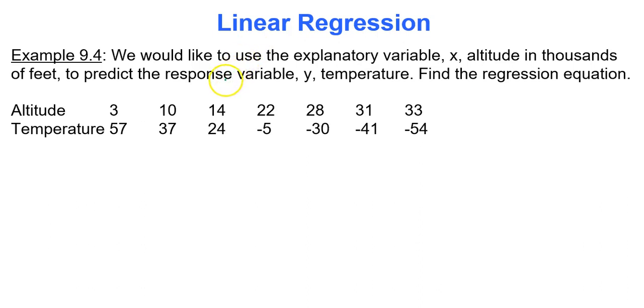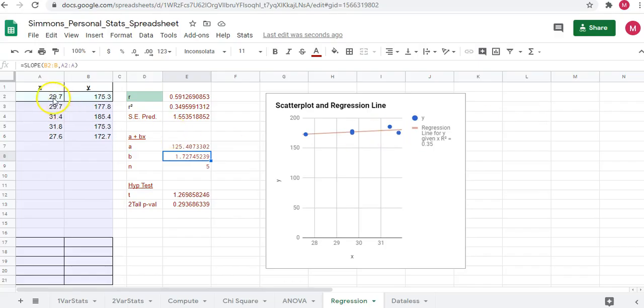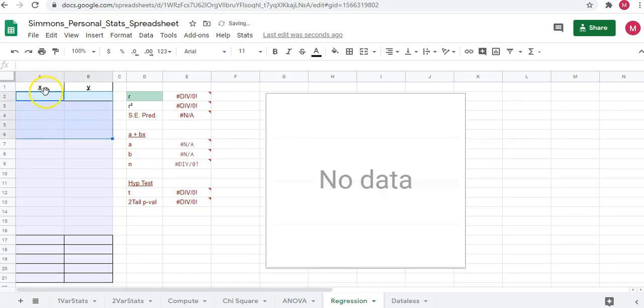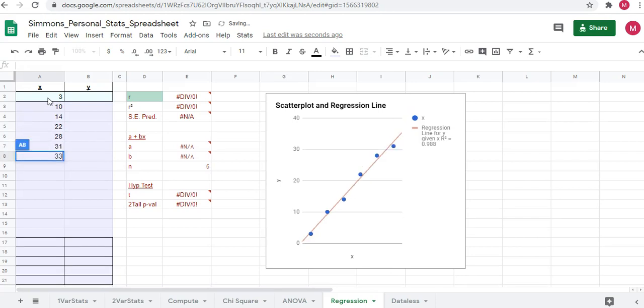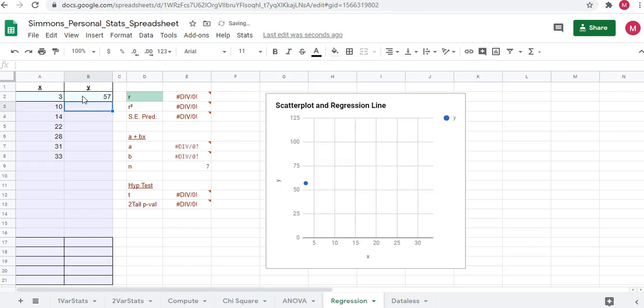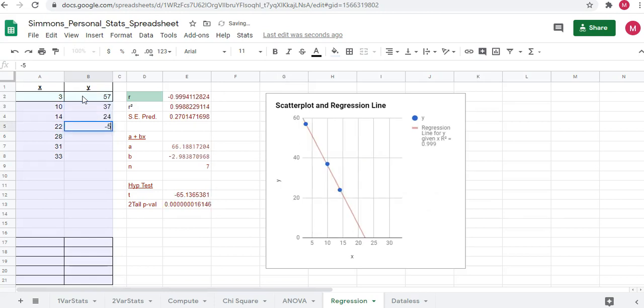Example 9.4: we would like to use the explanatory variable x, which is altitude in thousands of feet, to predict the response variable y, temperature. So altitude to predict temperature. Let's find the regression equation. Remember y hat equals a plus bx. Let's go to Google Sheets and see what's going on. Let's type in the altitudes and the temperatures. Altitude, we'll just type it starting in cell A2. Remember always push enter after you enter each value.